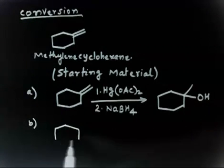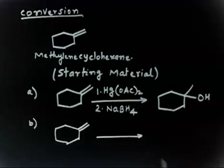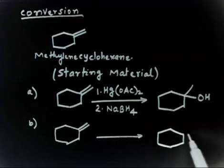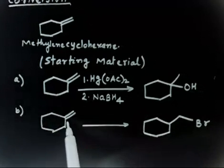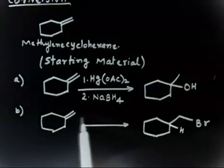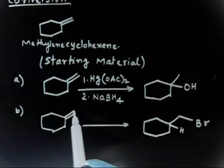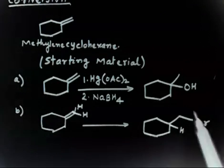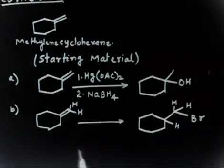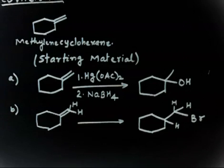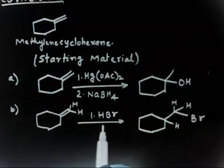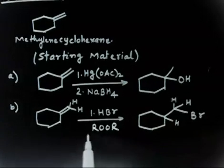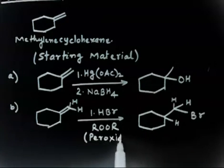Now let us discuss the next part. The starting material is the same. Here you have to prepare a compound with HBr added. This is addition of HBr — hydrogen is added to the position where you have less hydrogen, which is anti-Markovnikov. The reagent is HBr in the presence of peroxide (ROOR or H₂O₂). HBr in the presence of peroxide gives anti-Markovnikov addition.